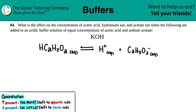Number 84. What is the effect on the concentration of acetic acid, hydronium ion, and acetate ion when the following are added to an acidic buffer solution of equal concentrations of acetic acid and sodium acetate? In this case, we are adding potassium hydroxide, KOH.